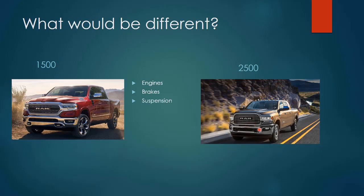The suspension will be different because this vehicle has to carry heavier loads. The transmission is going to be different because you require a bigger engine with more torque — the gears in the transmission are going to be experiencing higher loads, meaning you have to design a different transmission. You could design a transmission for the 2500 and use it in the 1500 — that's fine — but you've got to make sure it can handle the anticipated loads. The tires will be different as well — they'll have different load ratings. The frames will be different. The couplings that attach the engine to the transmission, the transmission to the drive shaft, the drive shaft to the differential, the differentials to the wheels — all those things are going to be different because it's designed for different loads.